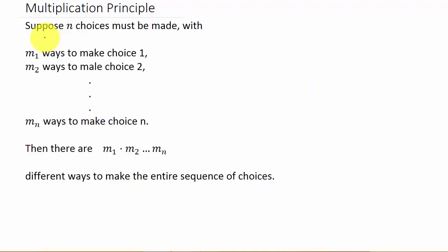If n choices must be made with m1 ways to make choice 1, m2 ways to make choice 2, and m sub n ways to make choice n, then there are m1 times m2 all the way to m sub n different ways to make the entire sequence of choices. Basically, to find the number of ways you can make these choices, it's just the number of ways you can make the first choice times the second choice times the third choice and so on.